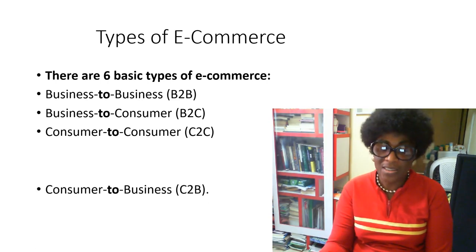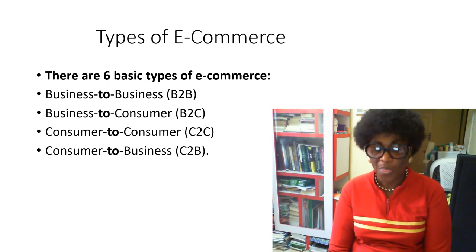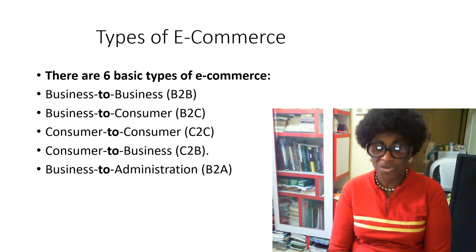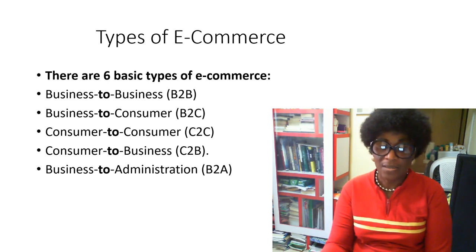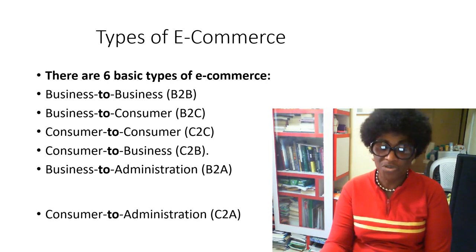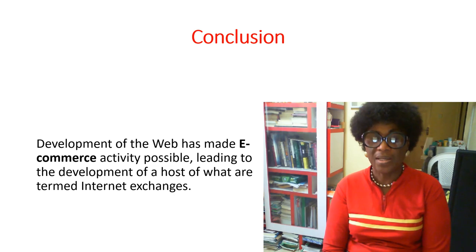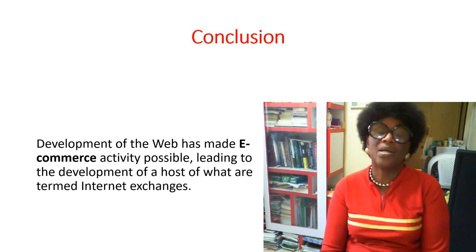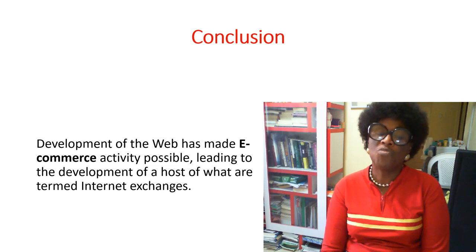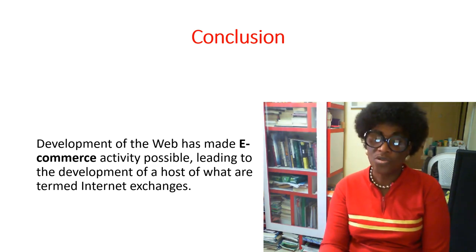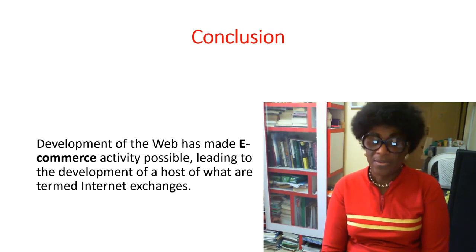Then you have C2C — consumer to consumer — which includes networking and linkages. You have C2B — consumer to business — when a consumer trades with a business. Then there is B2A — business to administration — involving the business and management, and C2A — consumer to administration. In conclusion, the development of the web has made e-commerce possible, leading to the development of internet exchanges, and as it develops further, more and more businesses are moving into e-commerce.